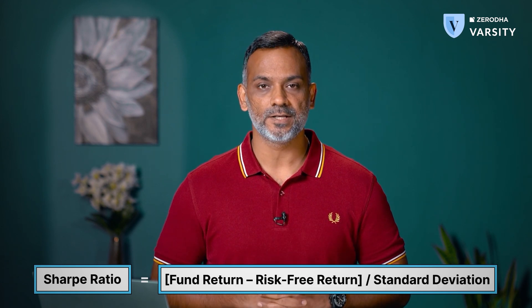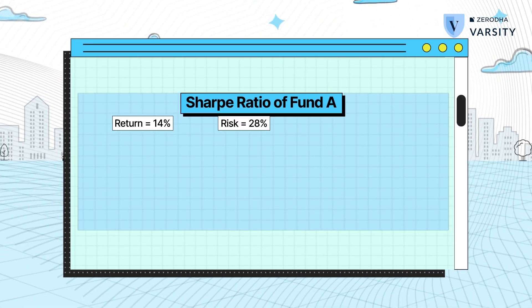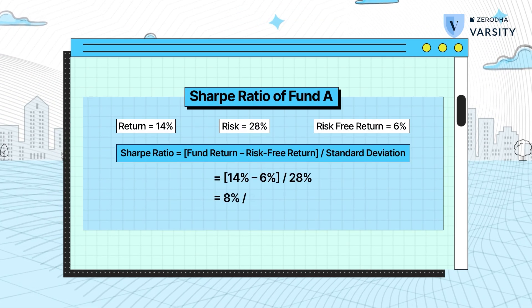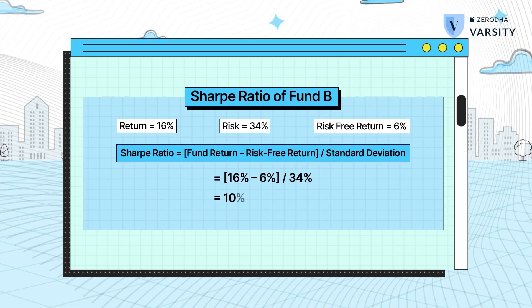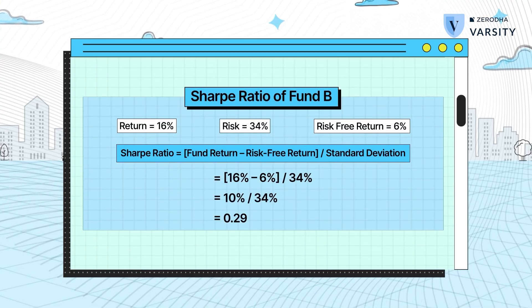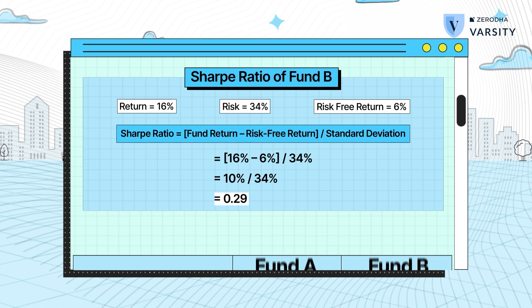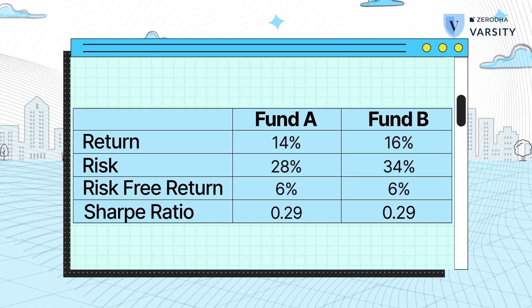The Sharpe Ratio of a fund is the excess return of the fund over the risk-free rate divided by the standard deviation of the fund. If you apply the Sharpe Ratio formula to Fund A, you'll get the Sharpe Ratio as 0.29. What this number conveys is that for every unit of risk, the return is 0.29 over and above the risk-free rate. The higher the Sharpe Ratio, the better it is, as we all want higher returns for every unit of risk. When we apply the Sharpe Ratio to Fund B, it also has a Sharpe Ratio of 0.29 — so it turns out both funds are similar and there's no real advantage in choosing one over the other.